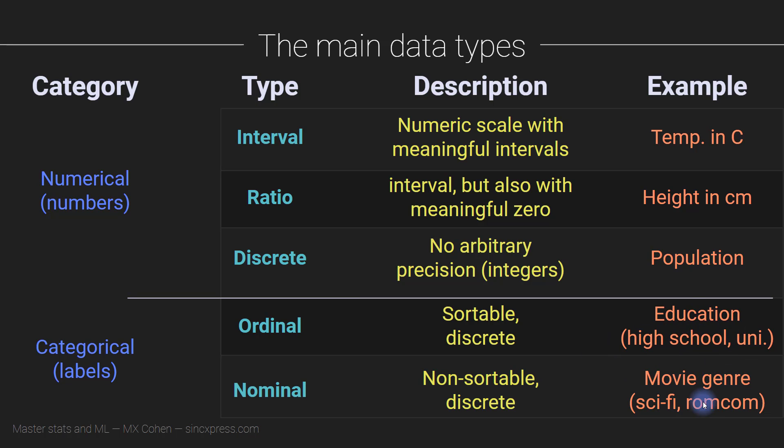Another example would be movie genre. So there's sci-fi, romantic comedy, documentaries, there's many different types of movie genres, these are all data, these are categorical data, so we cannot really assign meaningful numbers to them. Okay, again, so you can just focus on these two categories of data. And don't worry so much about the finer distinctions here.